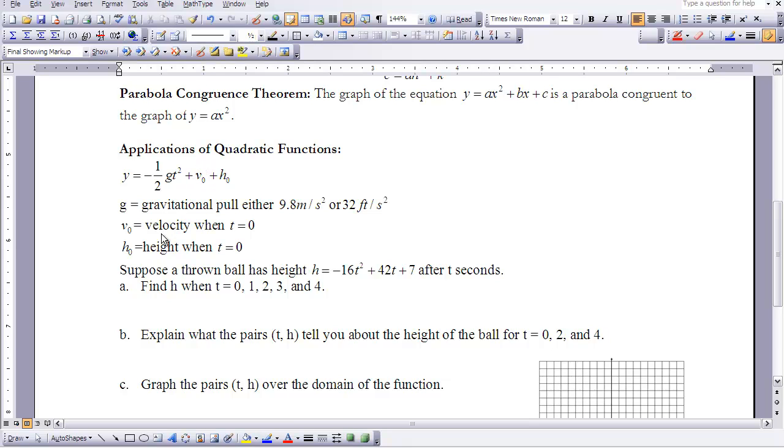This t stands for time. V sub zero is your initial velocity when t is zero, and your height when t is zero, or we say our initial height. So we're going to explore this as an equation that was derived from this one up here.